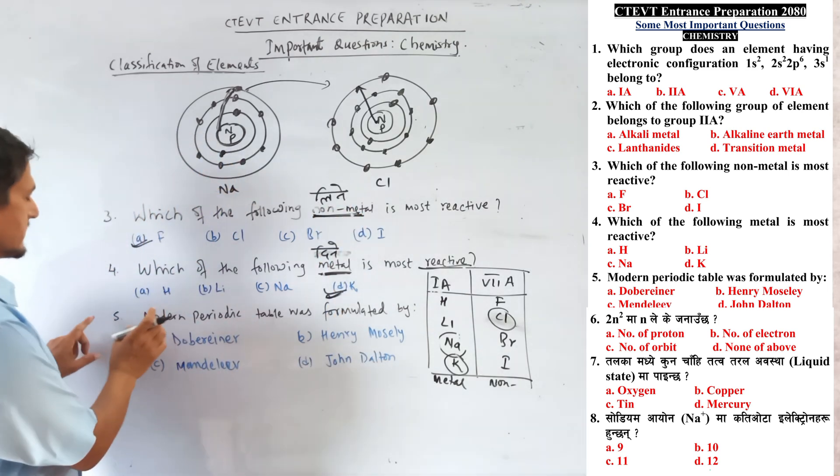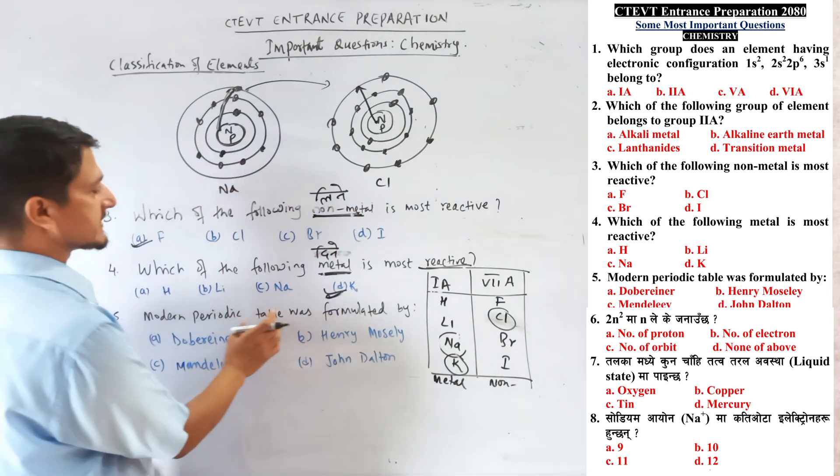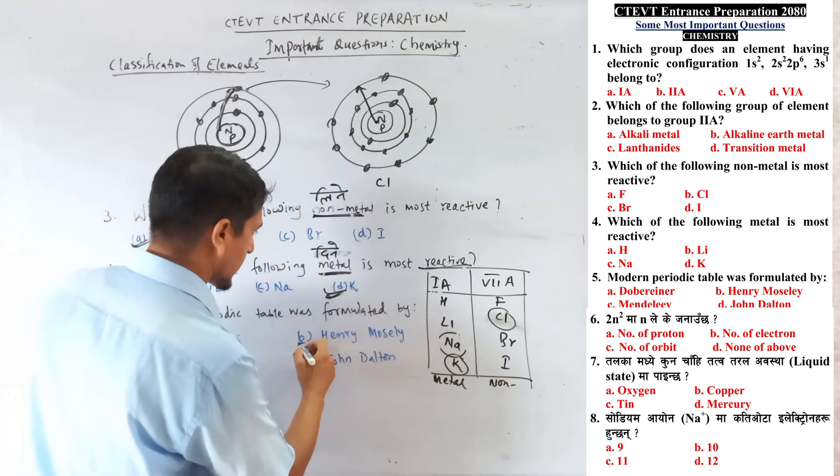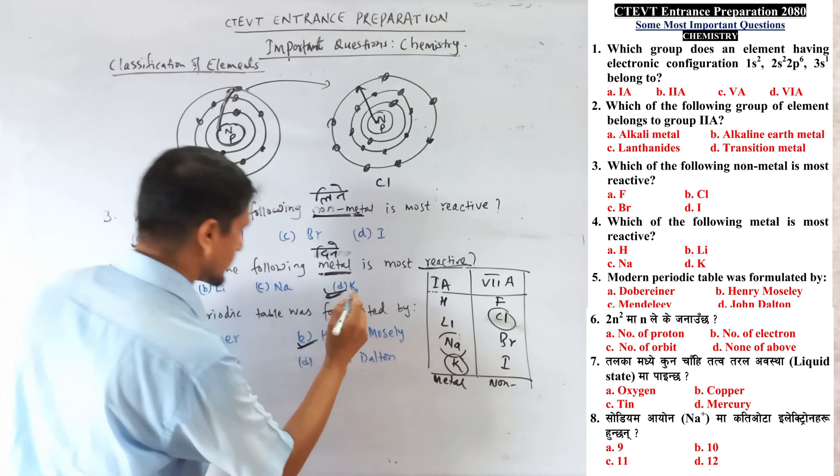Question number 5: The modern periodic table was formulated by Henry Moseley.